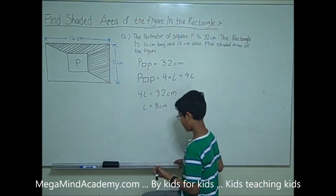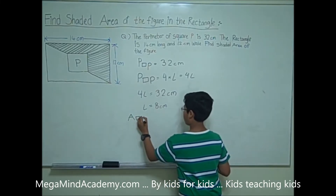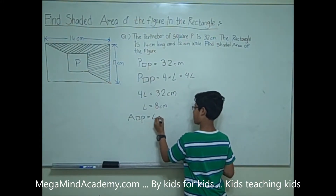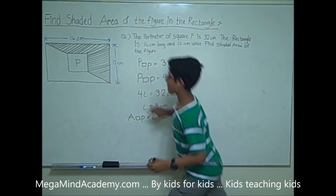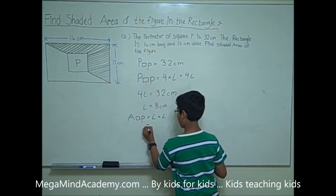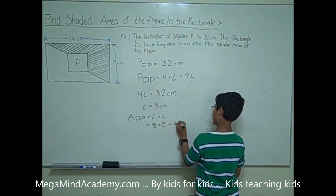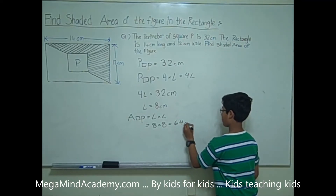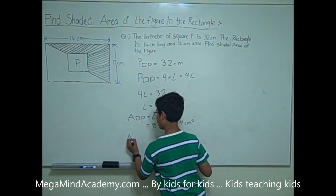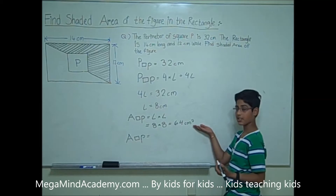The area of square P is equal to the length times the length. The length of square P is 8 cm, so it's equal to 8 times 8, which is 64 cm squared. So the area of square P is 64 cm squared.